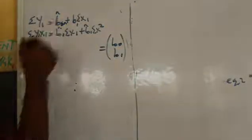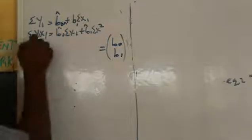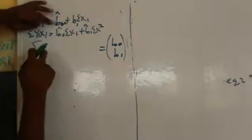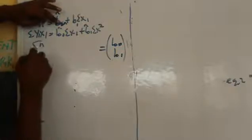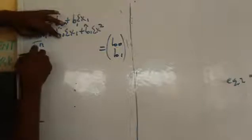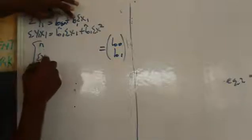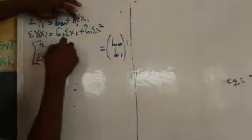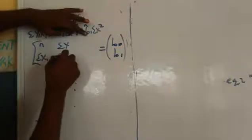Having understood this, I can just open the matrix here. I take the value beside b0, which is n, then beside b0 here, which is Σx. Then the value for b1, which is Σx, and the value for b1 down here, which is Σx-squared.